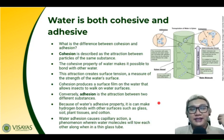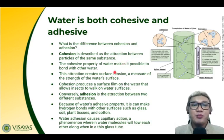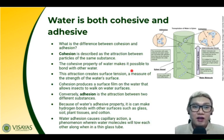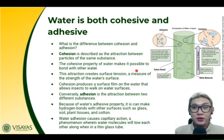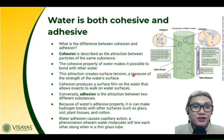Another property is the cohesiveness and adhesiveness of water molecules. Cohesion is the attraction between particles of the same substance. The cohesive property of water makes it possible for water to bond with other water molecules — they are attracted to each other. An example is that water molecules attract each other, and that attraction creates surface tension, which is a measure of the strength of the water surface.